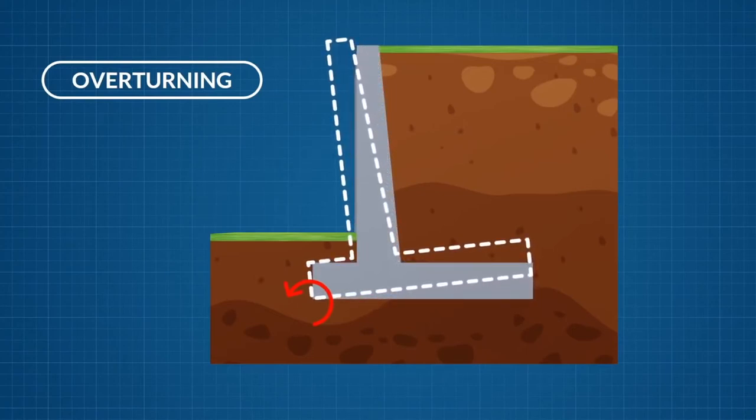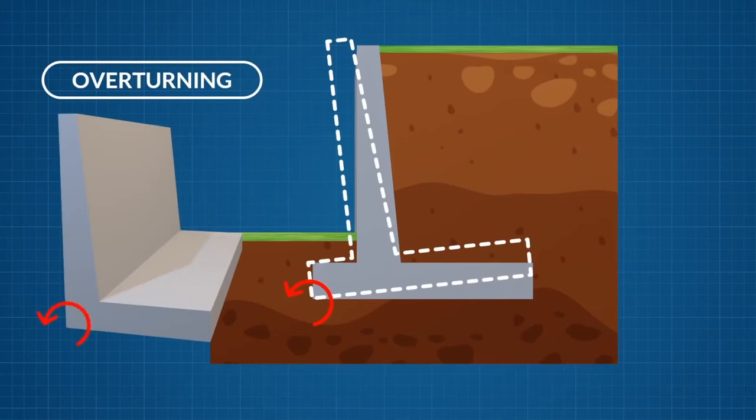In the absence of the toe slab, the base directly below the wall stem will act as the center of rotation.